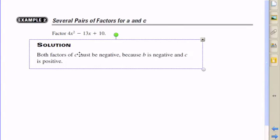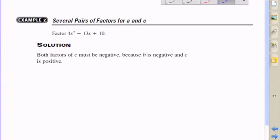Both factors of C must be negative because B is negative and C is positive. This pattern where the coefficient of x, which is negative 13, that's negative, and also the constant 10. So the constant's positive and the coefficient of x is negative.